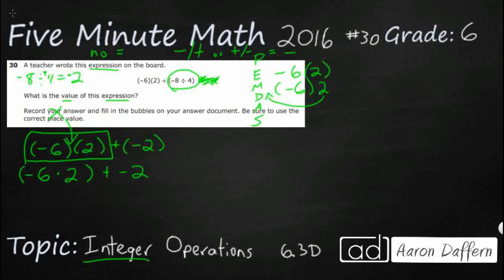So negative 6 times 2, that's going to be negative 12, because remember what we have here is a positive and negative. So that's plus negative 2, so remember positive and negative, that makes a negative minus 2.